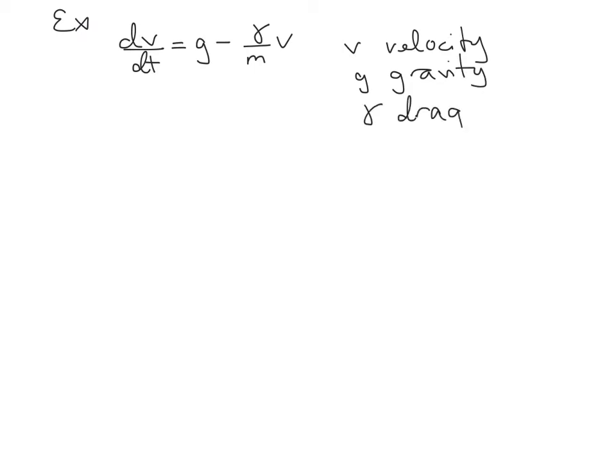All right, a couple more here, just so you can get an idea of kind of what some differential equations look like, and how they model real-world scenarios. dv dt is equal to g minus gamma over m times v. So this is a model for some kind of a falling object. V is velocity, and g is gravity, and gamma is a drag coefficient on the object, and m is the mass of the object.